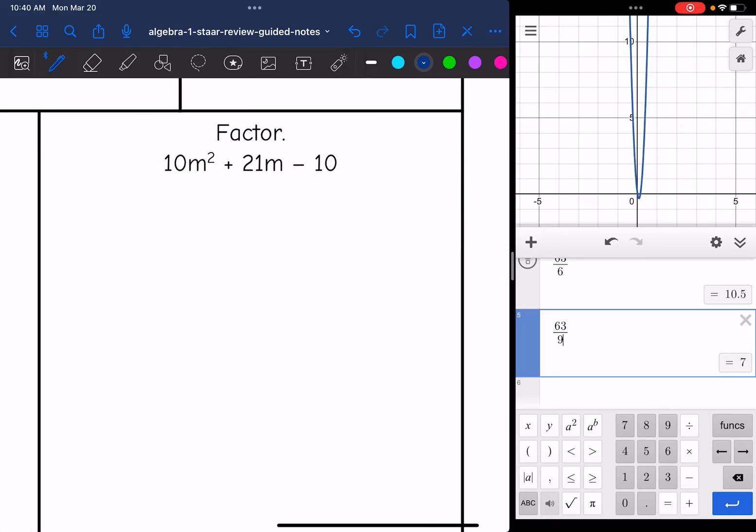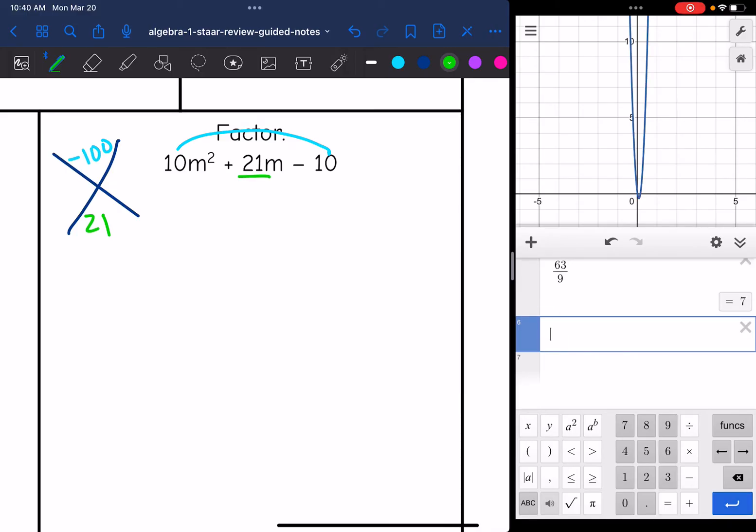Okay, let's look at this next one. It's a trinomial. I don't see a GCF, so let's jump to the x. I need to figure out what multiplies to 10 times negative 10, which is negative 100, and adds to 21. So I'm multiplying to negative 100 and adding to 21. I believe that would be 25 and negative 4. Yes, those are my numbers.